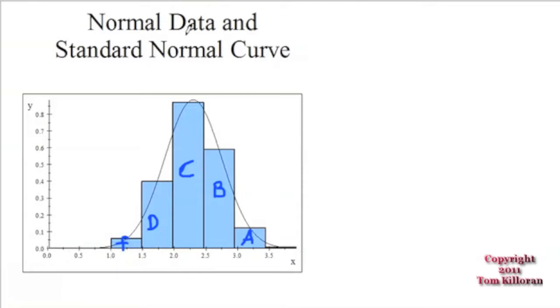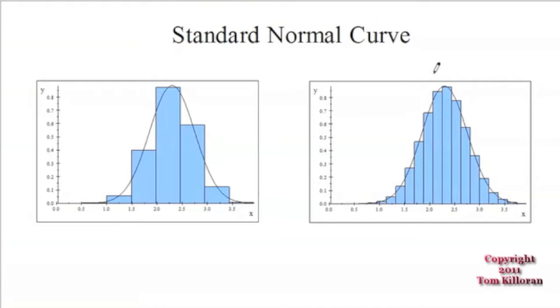Now what happens with normalized data is if you break these up into smaller groups, like some colleges have C minuses, C's, and C pluses, so we could break each one of these bar graphs into three pieces, we'd get something that looks more like this over here.